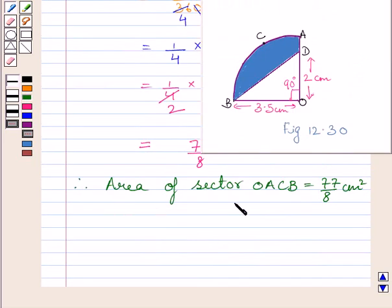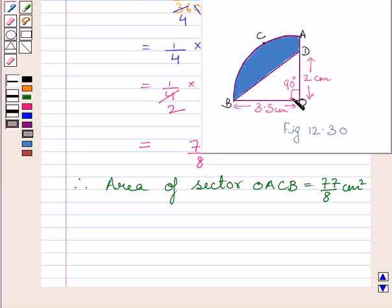This completes the first part of the question. Now we have to find the area of the shaded region. The area of the shaded region equals area of quadrant OACB minus area of triangle ODB. So we will find the area of triangle ODB now.